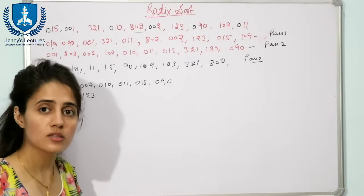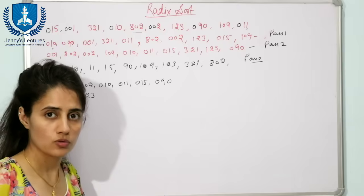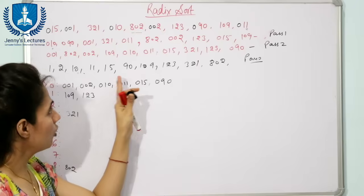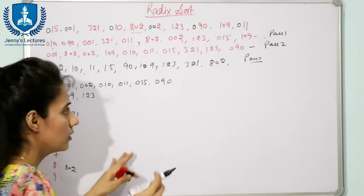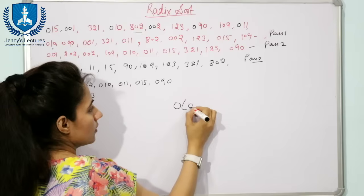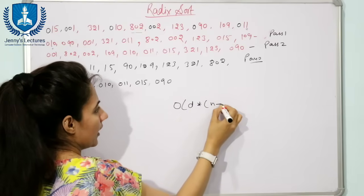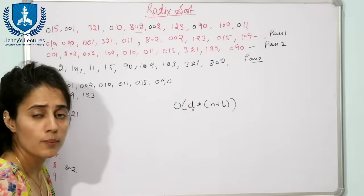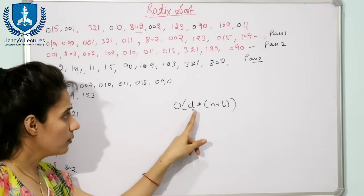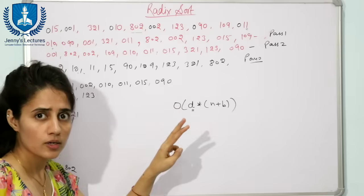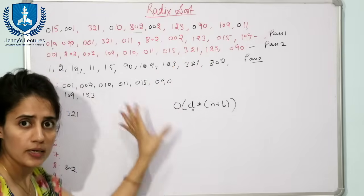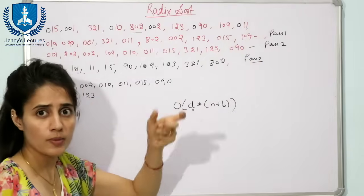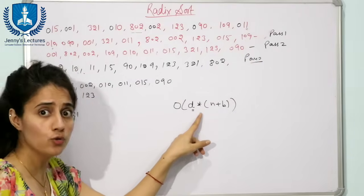Radix Sort uses Count Sort as a subroutine. The time complexity for this sort is O(d × (n + b)). Here d is the number of digits in the maximum number — here it is 3. For each digit we repeat the steps, so we repeat d times.